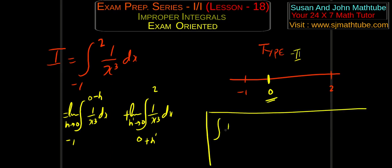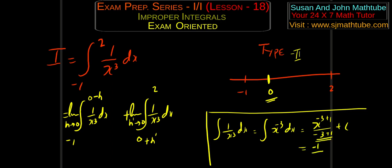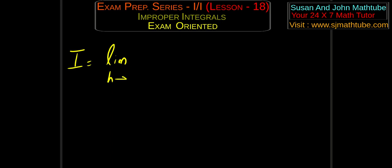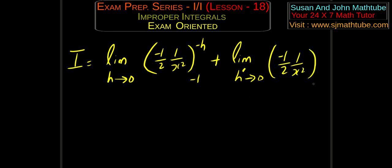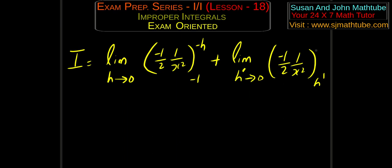In the next step, it's all about evaluation. I'm going to write integral of 1 by x cube — that is x to the power minus 3 dx. And that will be x to the power minus 3 plus 1 by minus 3 plus 1 plus c, and this is minus 2. We get minus 1 by 2 times 1 by x square plus c. So i equals limit h tends to 0: minus 1 by 2 times 1 by x square within the limits minus 1 to minus h, plus limit h prime tends to 0: minus 1 by 2 times 1 by x square within the limits h prime to 2.